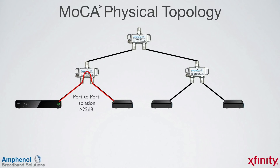For traditional cable TV services, the signal was never intended to go from one output port to the other. In fact, we relied on the port-to-port isolation to prevent a cable service on one port from interfering with a service on a different port. With MOCA, since it is an in-home network, it needs to communicate throughout the house, and the only way to do that is between output ports of the splitters.